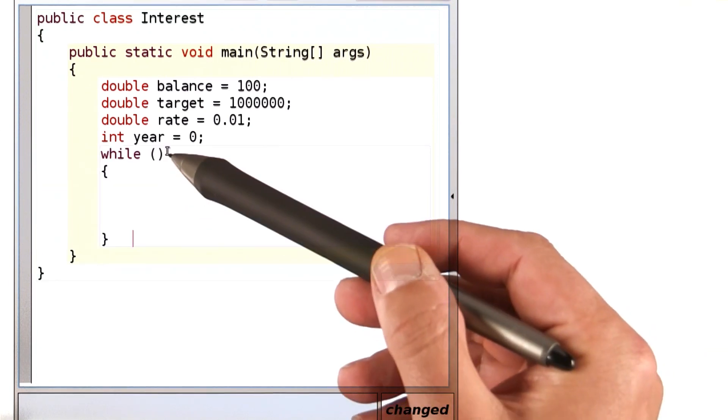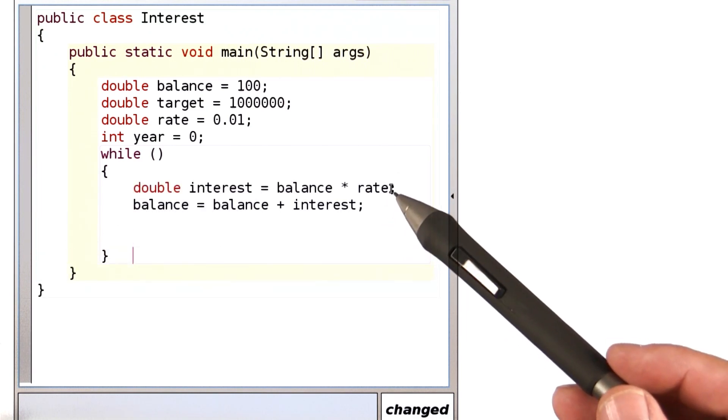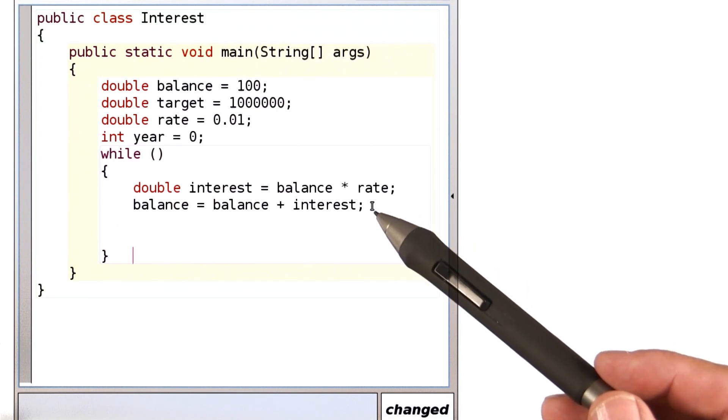In Java, you use the while loop to repeat statements. And that's exactly what we need. We want to repeat the statements that add the interest. Here we compute the interest, here we add the interest to the balance.